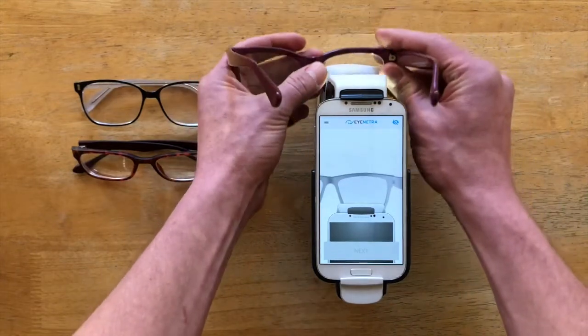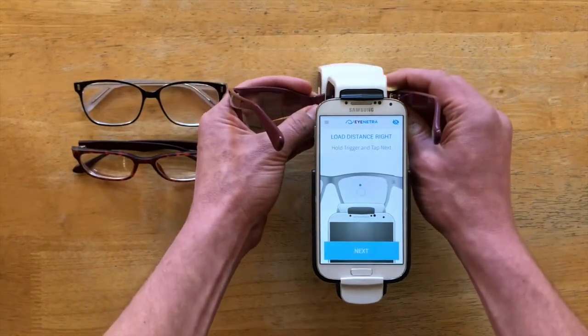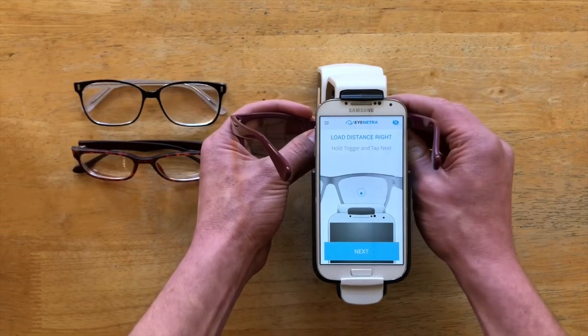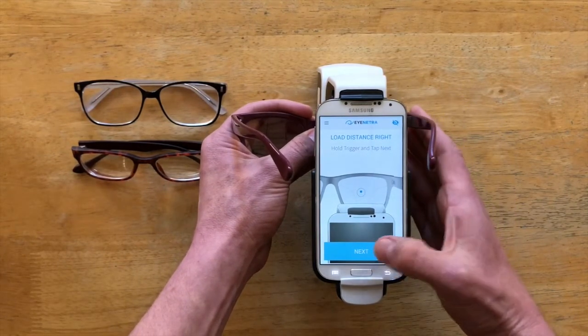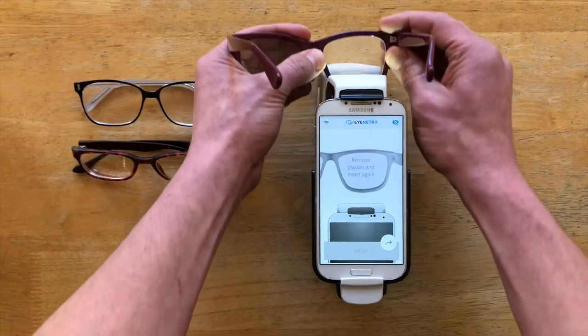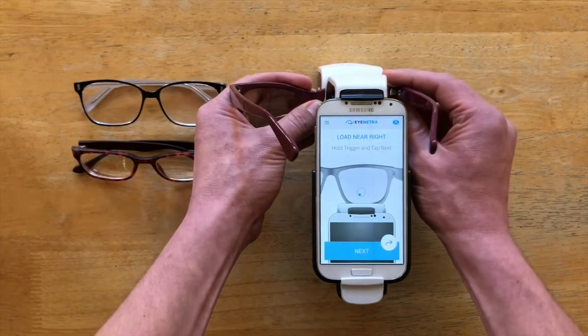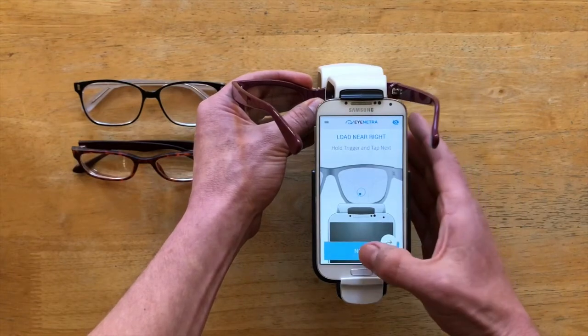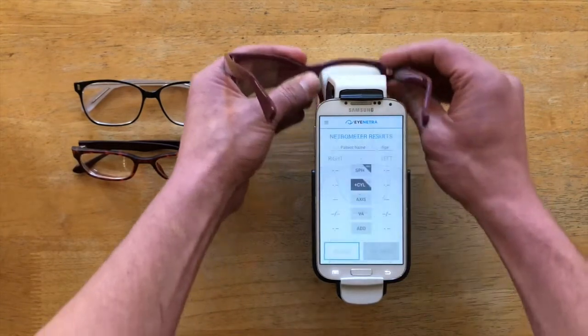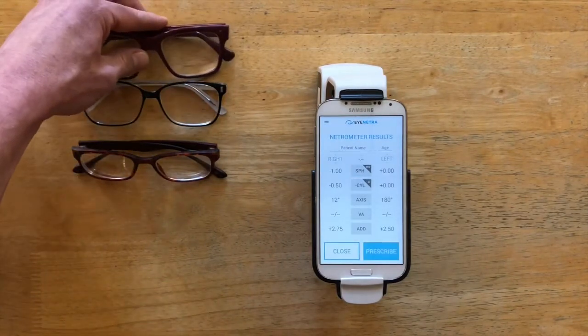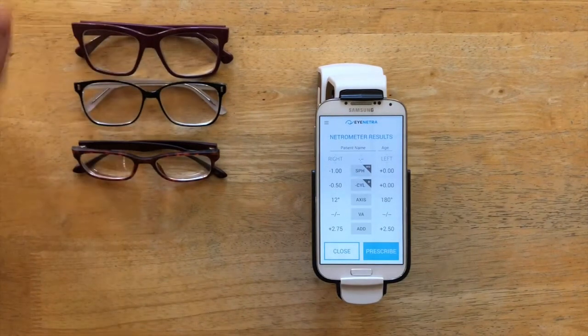And you'll notice I'm always using nice, slow, controlled movements when I'm taking my measurements. Again, find the distance measurement, remove the glasses, and reinsert them slowly. Very good. And there we are.